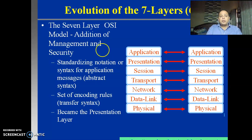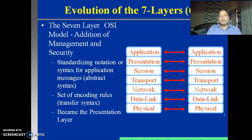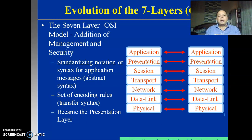Very soon in the process of dividing the steps of communication, it was found that the seven layer model is sufficient to clearly categorize the steps of transmission and reception - the steps of data communication. As you can see on the screen, the best model that was thought of in 1984 is the seven layer model. These seven layers are: physical layer, data link layer, network layer, transport layer, session layer, presentation layer, and application layer.